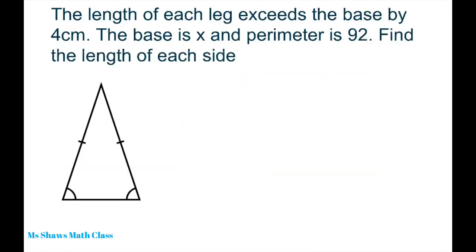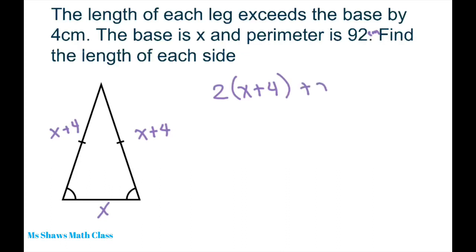This one — let's write an equation. The length of each leg exceeds the base by 4 centimeters. The perimeter is also 92 centimeters. So the base is X and the legs are X plus 4. We're going to have two X plus 4s and one X, and that equals 92. So now I'm going to use the distributive property, and this is going to be 2X plus 8 plus X equals 92.